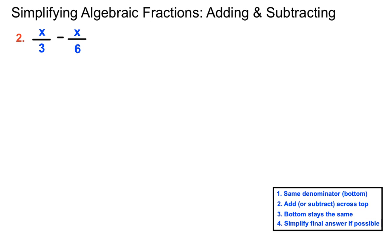In the second example we have x over 3 minus x over 6. The lowest common multiple here is 6 itself, so we turn both into sixths. The second fraction is already over 6; for the first we multiply the bottom by 2 and do the same to the top, creating 2x. We subtract across the top — remembering that x is actually 1x — so 2x minus 1x leaves us with x. The bottom stays the same: x over 6 is our answer.